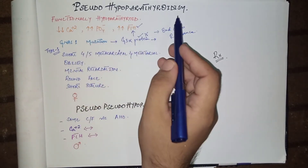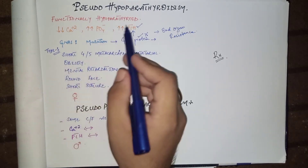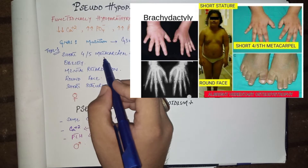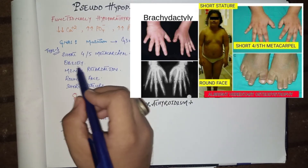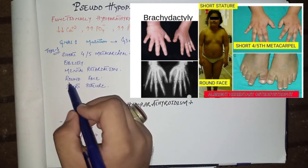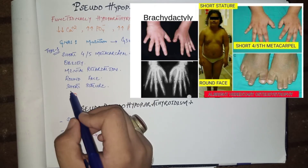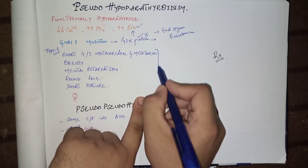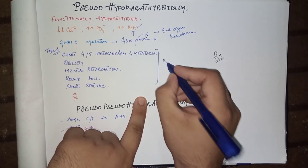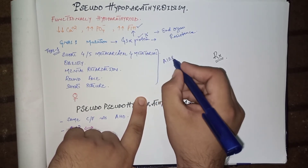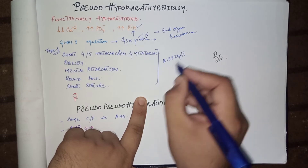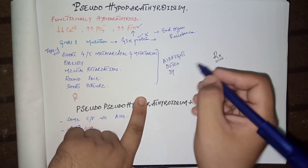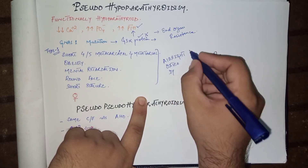The most common type of pseudo hypoparathyroidism is type 1, in which the patient has short fourth or fifth metacarpal and metatarsal bones. The patient is obese, mentally retarded, and has a round face and short stature. All these features are collectively termed Albright hereditary osteodystrophy.